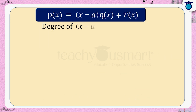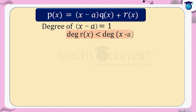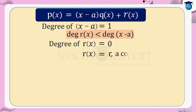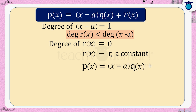Here the degree of x minus a equals one. Since the degree of the remainder is less than that of the divisor x minus a, the degree of r of x equals zero. Therefore r of x can be taken as a constant r. Then we can write p of x equals x minus a multiplied by q of x plus r.